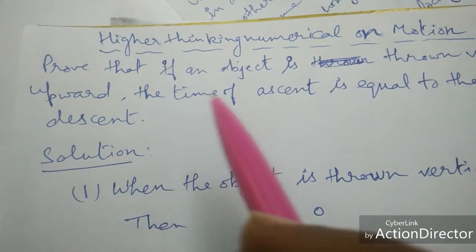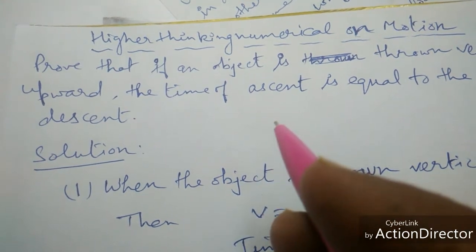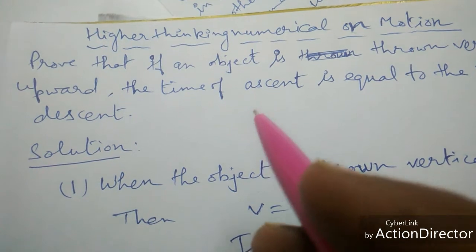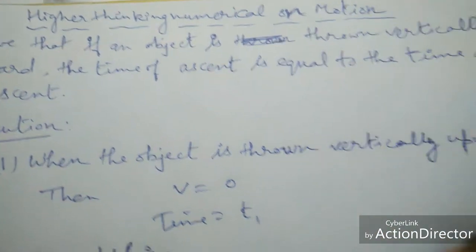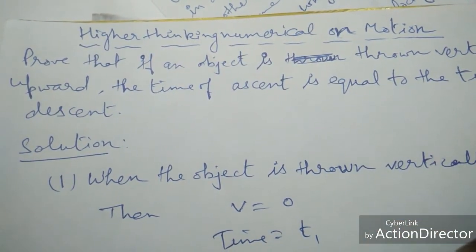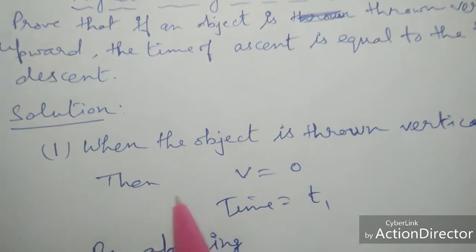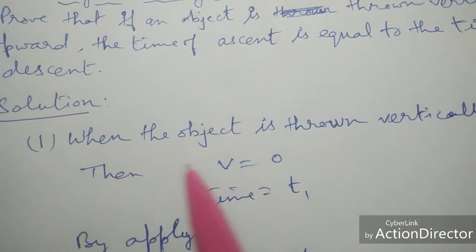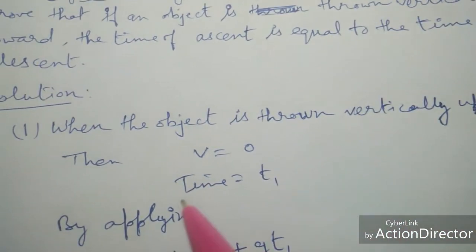In this we have to prove that if we throw an object upward and it comes down, then in both cases the time of ascent is equal to the time of descent — that is, the time of going up and the time of coming down are equal. Solution: first case, when the object is thrown vertically upward.